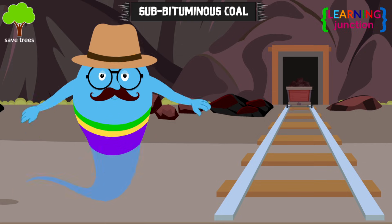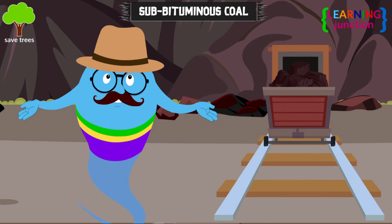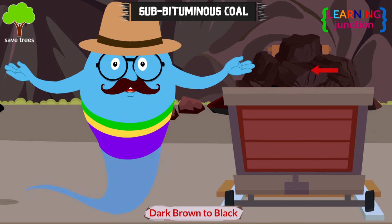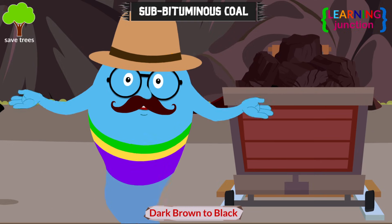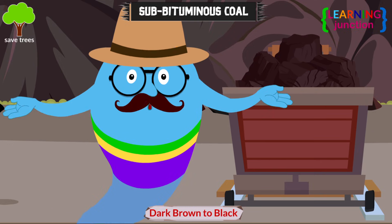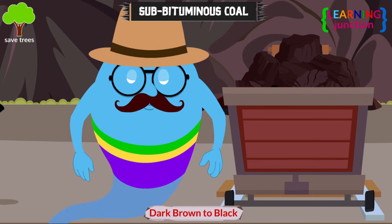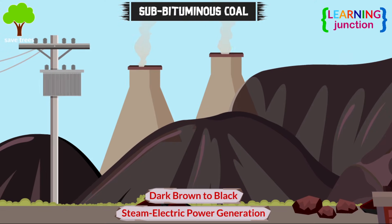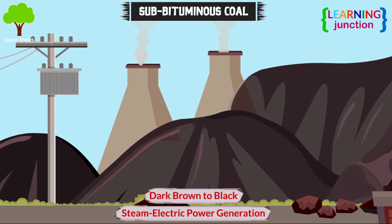Sub-bituminous coal is a dark brown to black coal. It's a relatively low-rank coal used mainly for steam electric power generation.